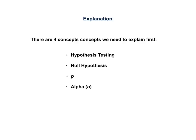Before we can provide an in-depth explanation of the keys to understanding, there are four concepts in these KTUs that we need to explain first: hypothesis testing, the null hypothesis, p (the p-value), and alpha. In addition to the explanation here, there are or will be individual videos for each of these four concepts.